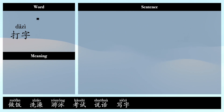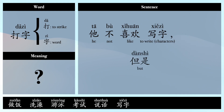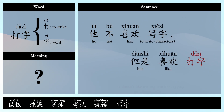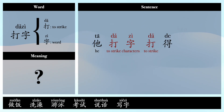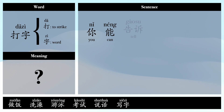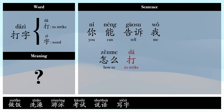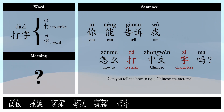打字 — 打: to strike, 字: word/character (i.e., to type). Example sentences: 他不喜欢写字，但是喜欢打字。(He doesn't like to write by hand, but he likes to type.) 他打字打得很快。(He types very fast.) 你能告诉我怎么打中文字吗? (Can you tell me how to type Chinese characters?)